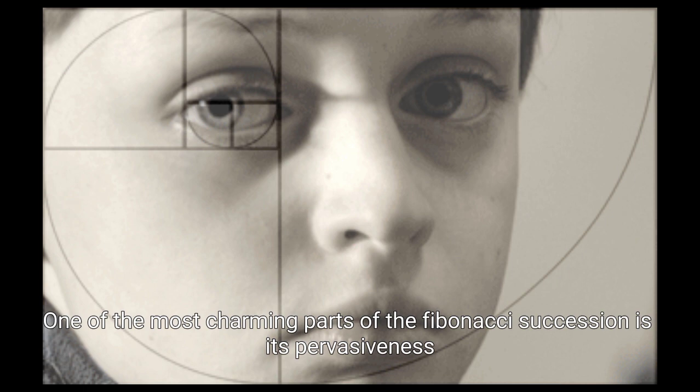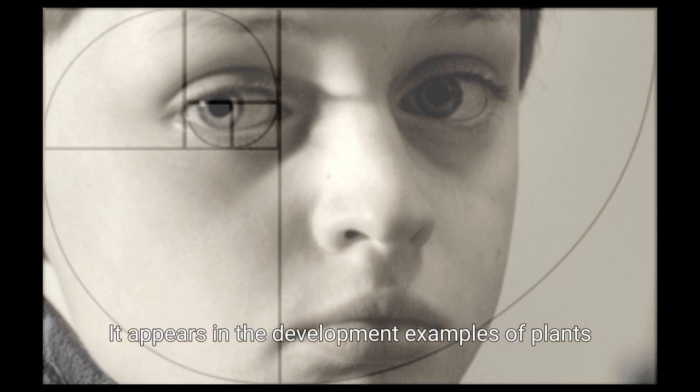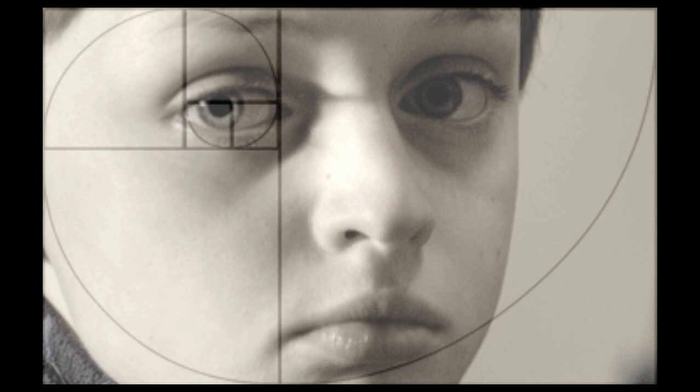One of the most charming parts of the Fibonacci succession is its pervasiveness in different organic and regular peculiarities. It appears in the development examples of plants, the course of action of leaves on stems.